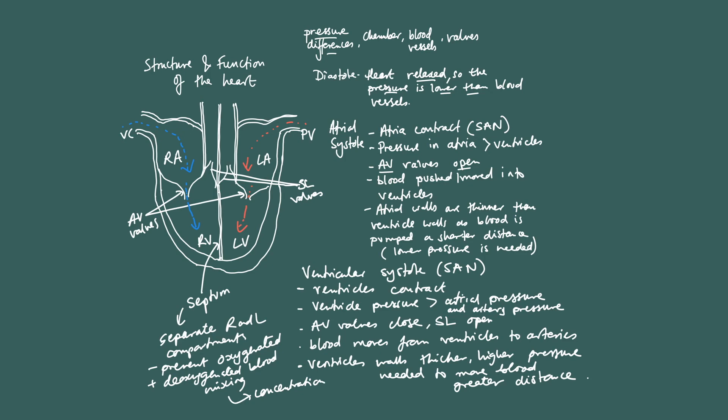If we prevent that blood from mixing, then we maintain a high carbon dioxide concentration in the deoxygenated blood and a high oxygen concentration in the oxygenated blood. This ensures that at the cells which require oxygen, there's a high concentration gradient for oxygen and a high concentration gradient for the diffusion of carbon dioxide in the opposite direction. This can be tested by examiners in various ways — the best preparation is to have a very good understanding of this.